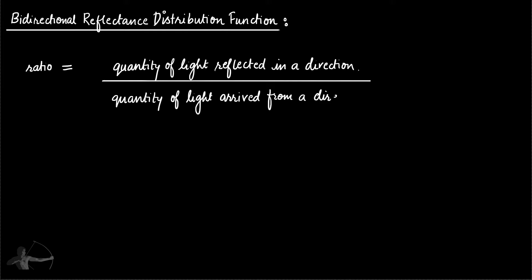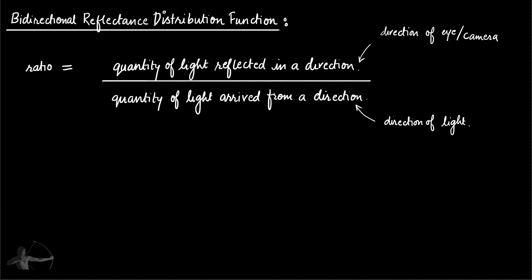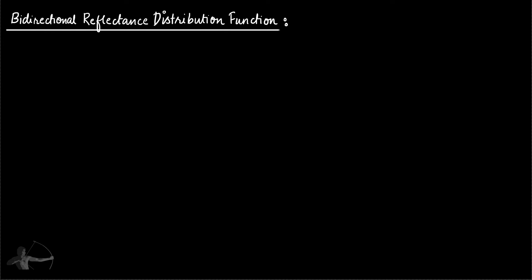For our shader, the outgoing direction will be the direction of the eye or the camera, and the incoming direction will be the direction of light from the point, because that's where the light is coming from in the scene. BRDF can also be described as a ratio of radiance to irradiance. In a previous chapter we understood the terms radiance and irradiance, so now we have gathered an idea of what BRDF is.